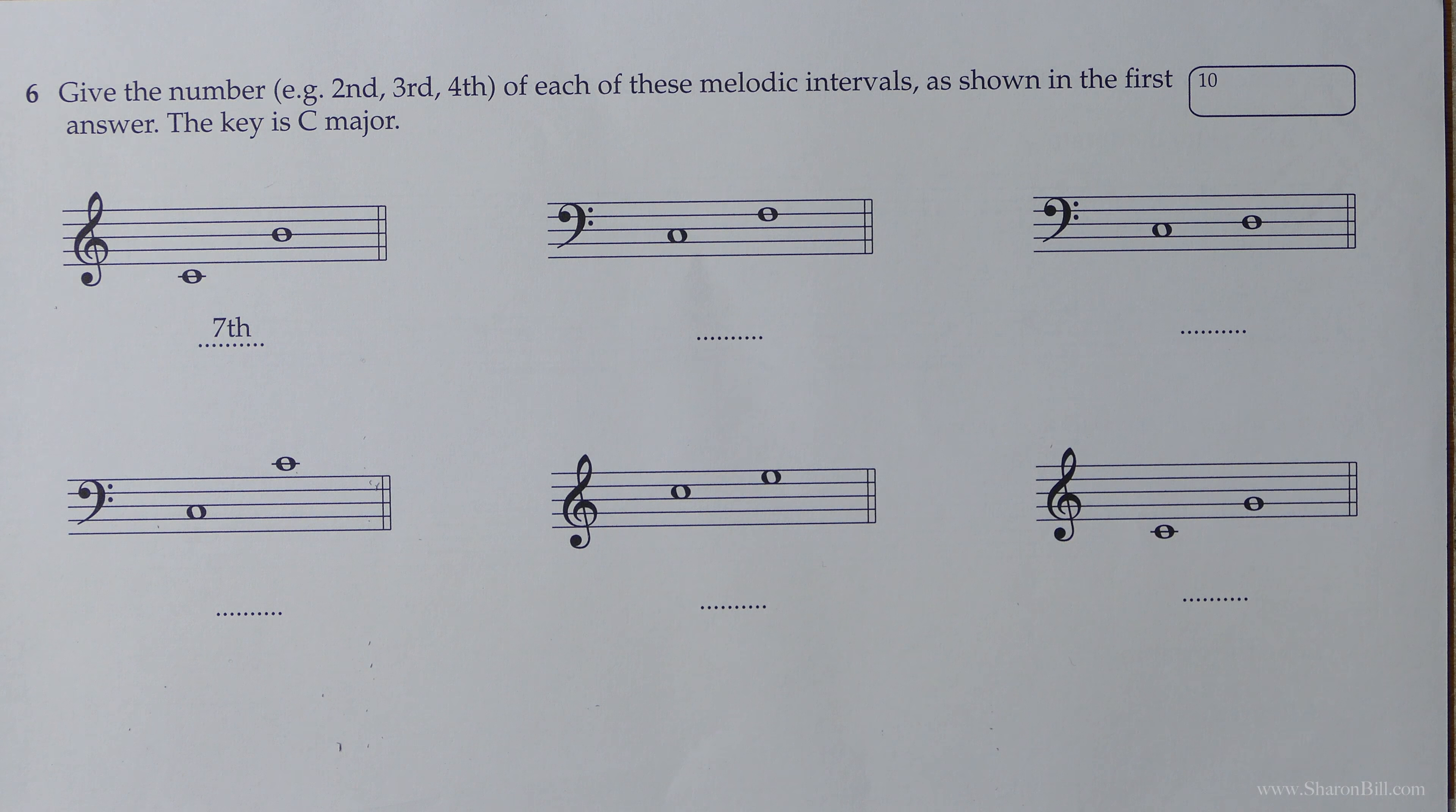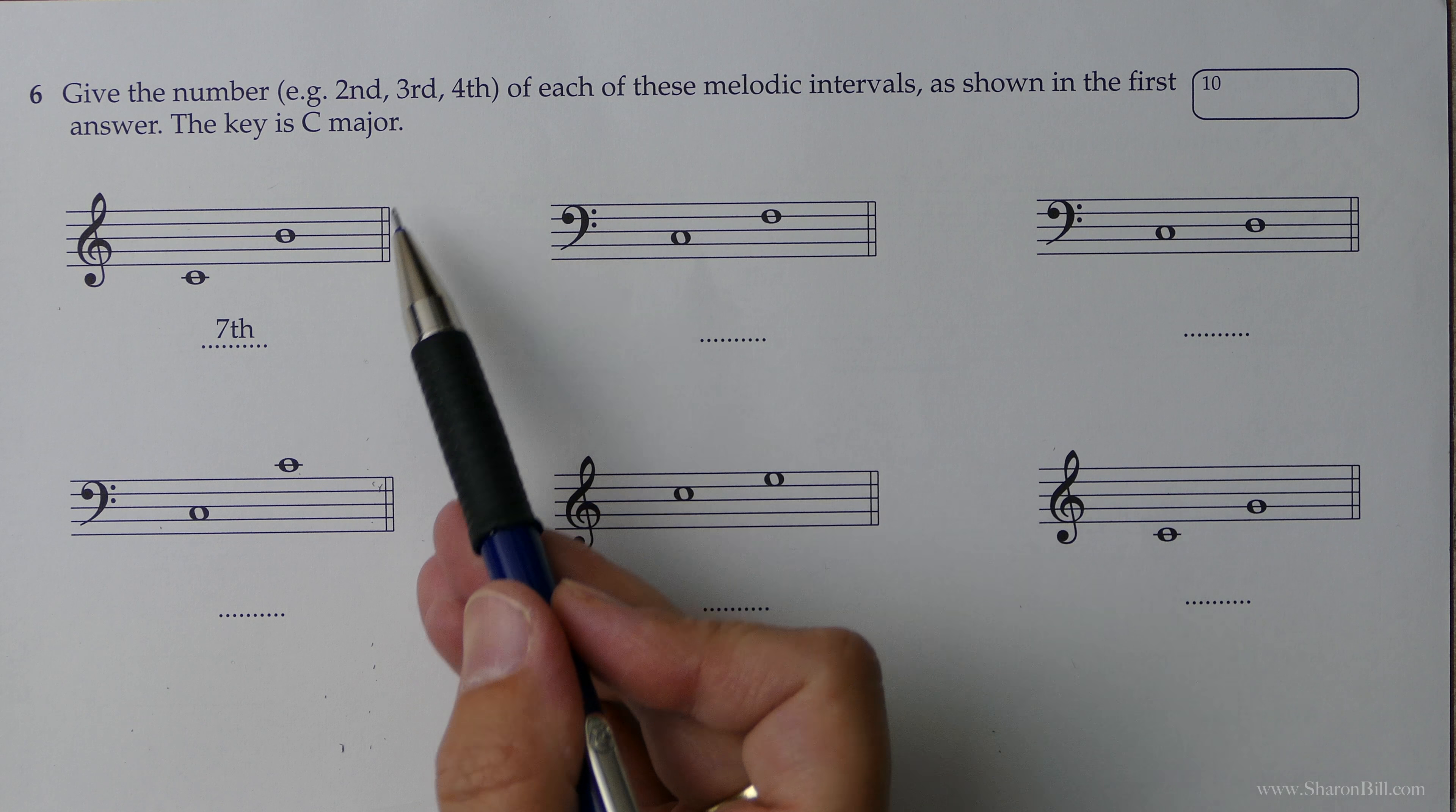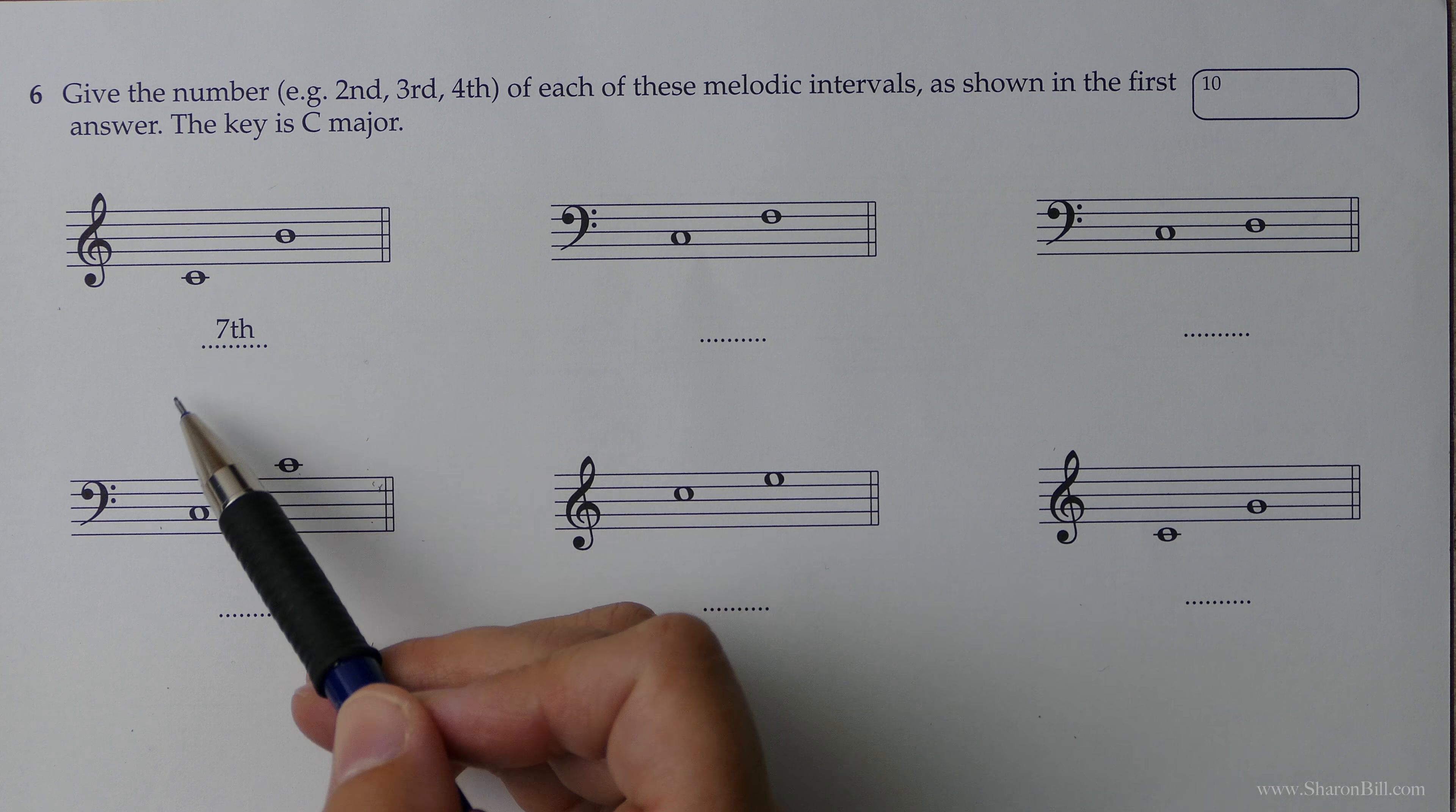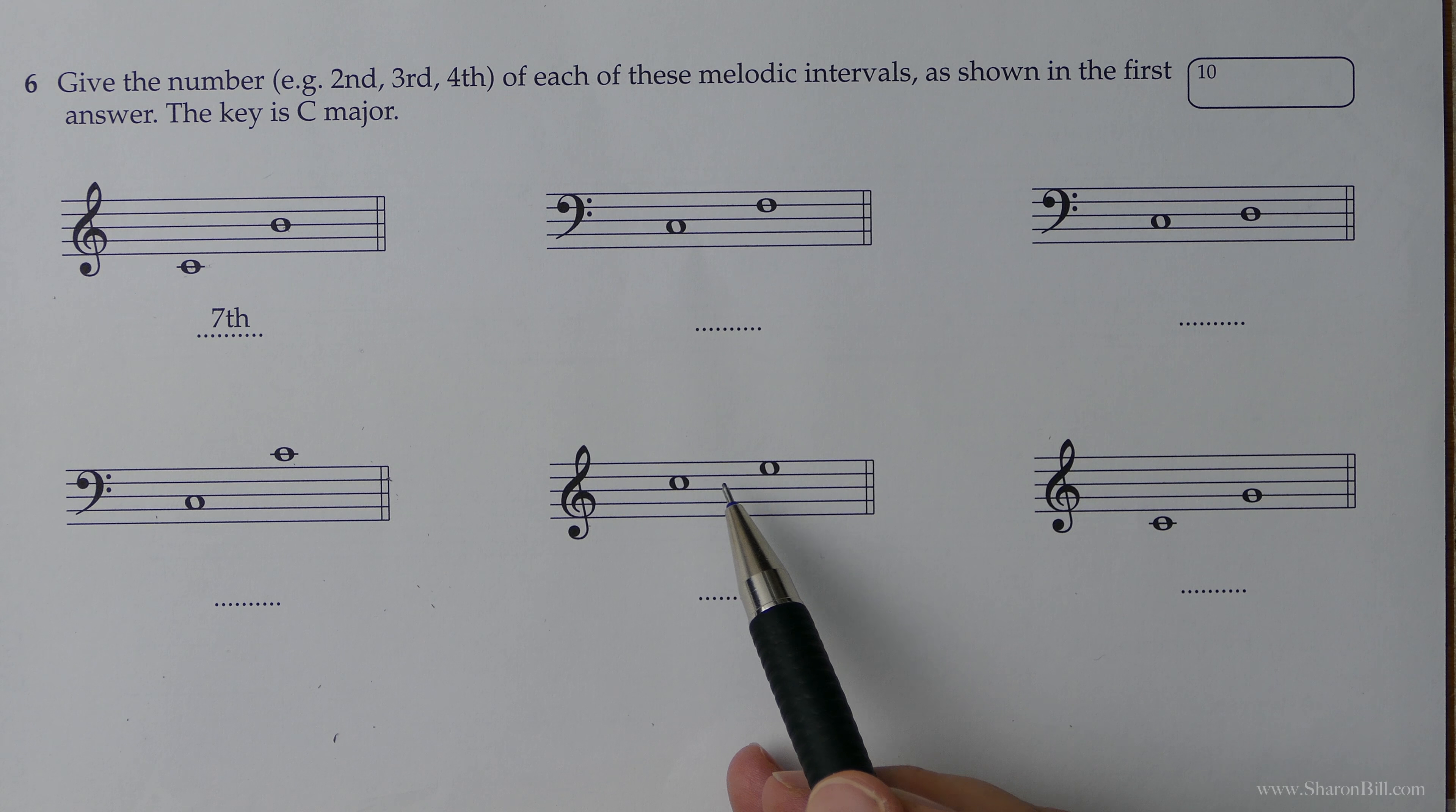So if you turn to page 15, we're going to have a little bit of counting to do for these melodic intervals. We need to give the number of each of these melodic intervals as shown in the first answer here. Melodic just means one after another as if it was in a melody. We always count from the lowest note up. And the only way you can perhaps go adrift here is if you forget to count the lowest note as note one. We're counting up the degrees of the scale.